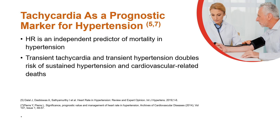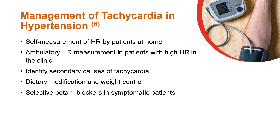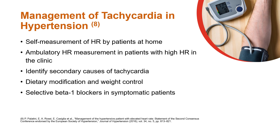The following are some approaches suggested by the European Society of Hypertension to manage tachycardia in hypertensive patients: self-measurement of heart rate by patients who are able to manage at home; ambulatory heart rate measurement must be considered in patients with a high heart rate in the clinic; identify secondary causes of tachycardia; dietary, medication, and weight control must be emphasized; and selective beta-1 blockers can be considered in symptomatic patients.